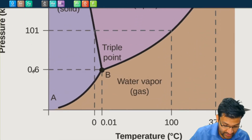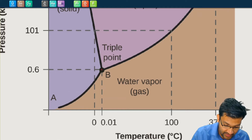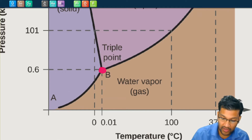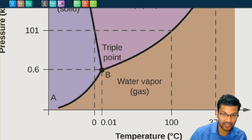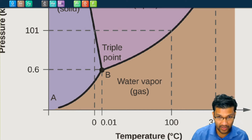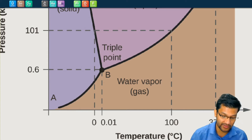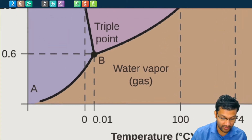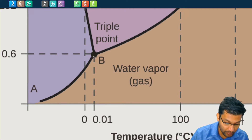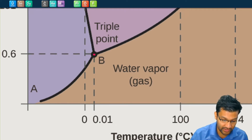Note that at 0.6 kilopascals and 0.01 degrees Celsius is what we call the triple point of water — the temperature and pressure where any of the three phases of water can exist at the same time: solid, liquid, or gas. You can create a mixture of water with all three states of matter, but only at that specific temperature and pressure.